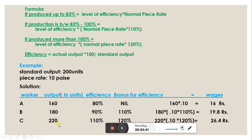Worker C produces 220 units, giving an efficiency of 110%, which is above 100%, so Worker C receives a bonus of 120% of the normal piece rate. Worker C's wages = 220 units × ₹0.10 × 120% = ₹26.40.